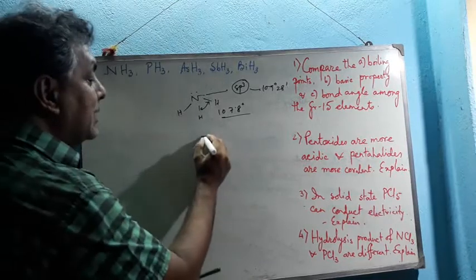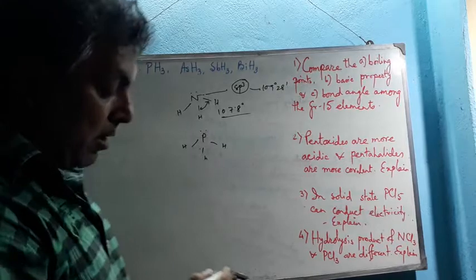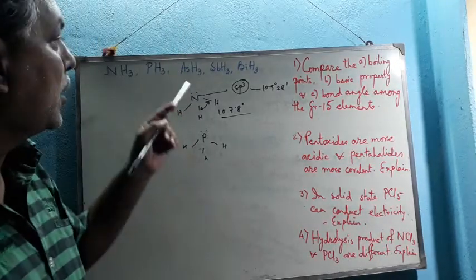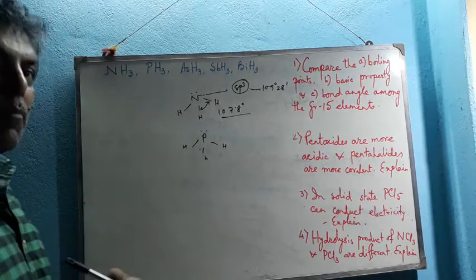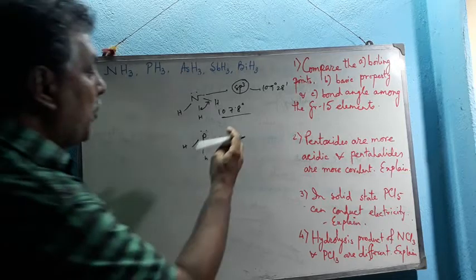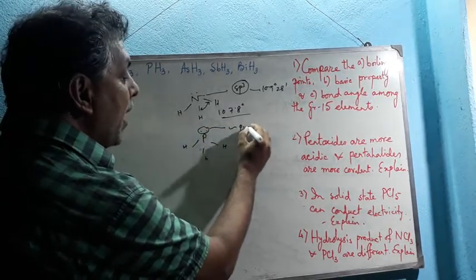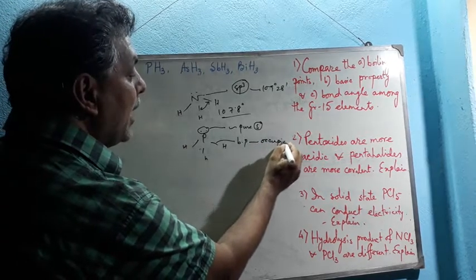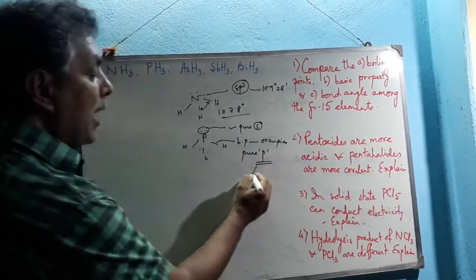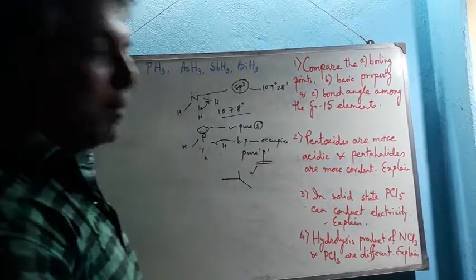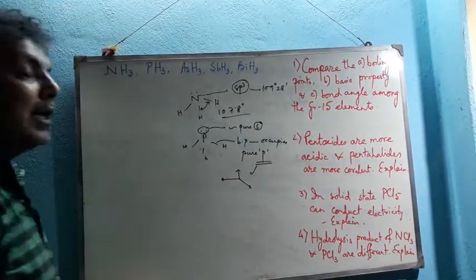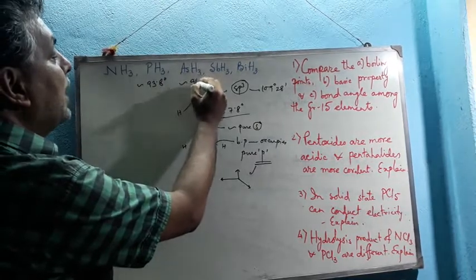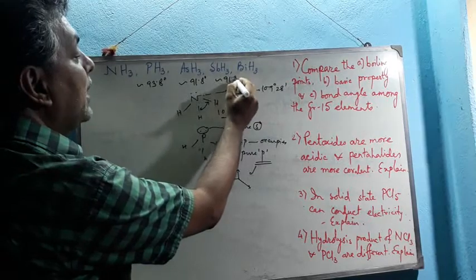As we go down the group with increase in size of the central atom, no proper hybridization takes place. The lone pair occupies an approximately pure s-orbital and the bond pairs occupy approximately pure p-orbitals. Since p-orbitals are mutually perpendicular to each other, the bond angle becomes nearer to 90°. In phosphine the bond angle is approximately 93.8°, in arsine approximately 91.8°, in stibine approximately 91.3°.